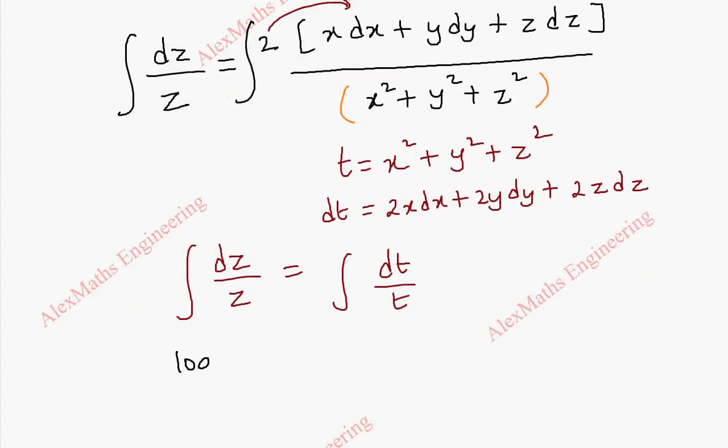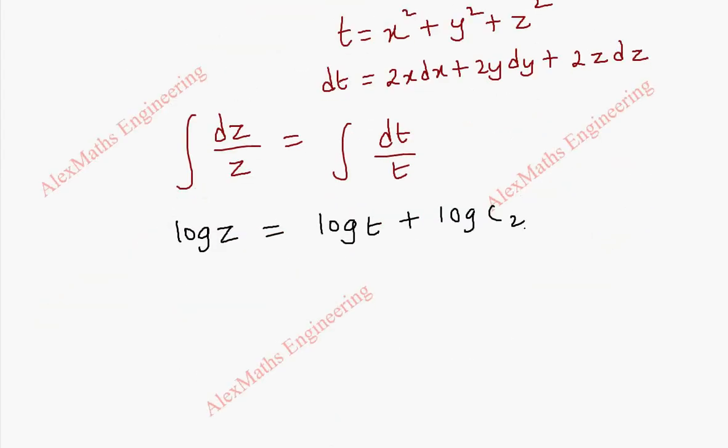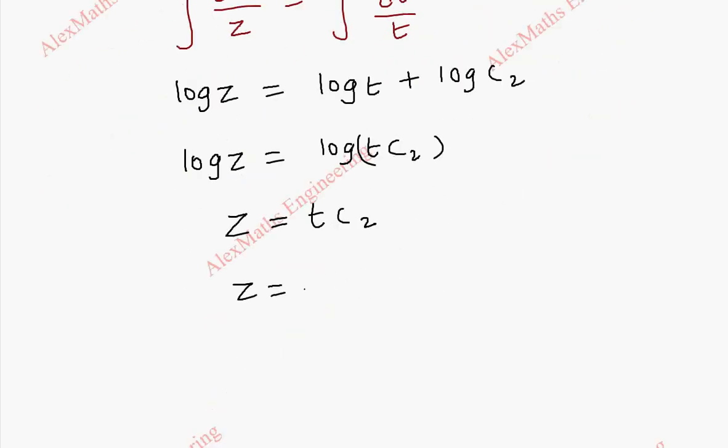This becomes log z equal to log of t plus log c2. And now using log rule this becomes log of t times c2. And by removing log on both sides, z is equal to t times c2. So t is x squared plus y squared plus z squared times c2. So from this c2 is z by x squared plus y squared plus z squared.